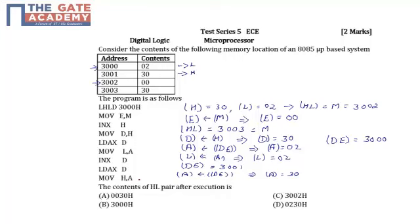The last instruction is MOV H,A, which means we copy the contents of A to H. So H equals 30.